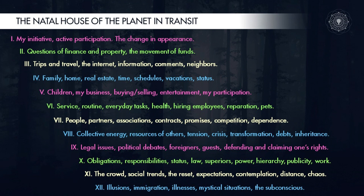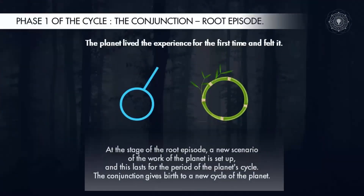This house absorbs all other houses because it is the house of the subconscious. Phase one of the cycle — the conjunction, the root episode: any trend is set or begins its existence during the conjunction. The conjunction of the transiting planet with the natal planet marks the emergence of a new experience. The natal planet experienced it for the first time and felt it at the stage of the root episode. A new scenario of the work of the planet is set up and exists for the period of the planet cycle. The conjunction gives birth to a new cycle of the planet.